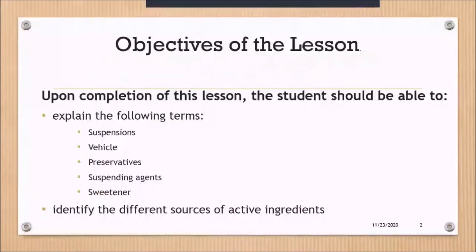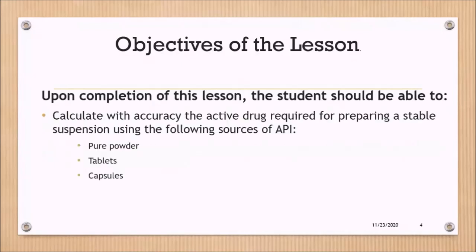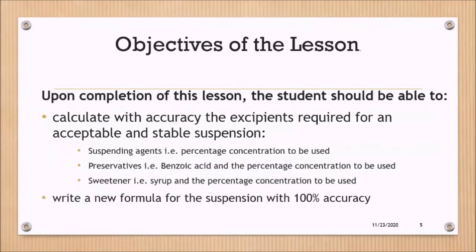The objectives are laid out here. We have to explain some terms, identify the different sources of active ingredients that will be used to compound our suspensions, and interpret the symbols and abbreviations. When we get the prescription order or medication order, we need to know what to calculate — especially in terms of dose. This is really a refresher on how to accurately calculate the dose based on age, weight, body surface area, and using a master formula. We also need to know how to calculate depending on the source of the active pharmaceutical ingredient, and we will be calculating some of the excipients that will be used.